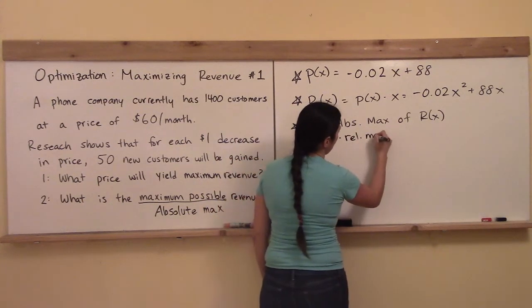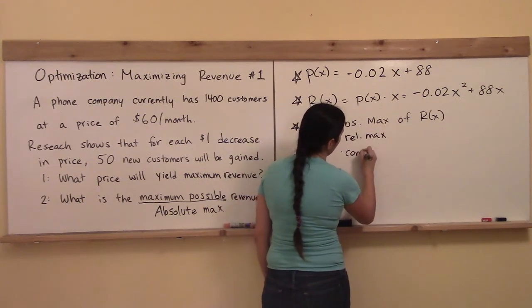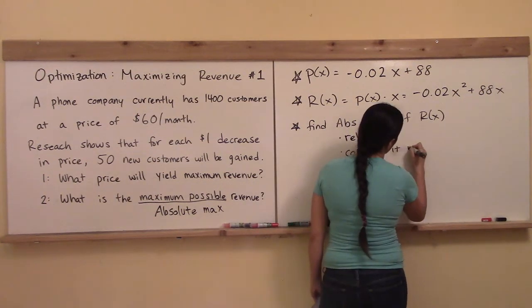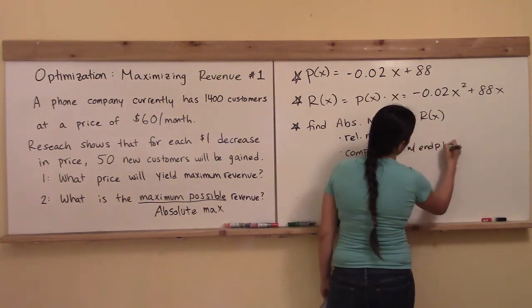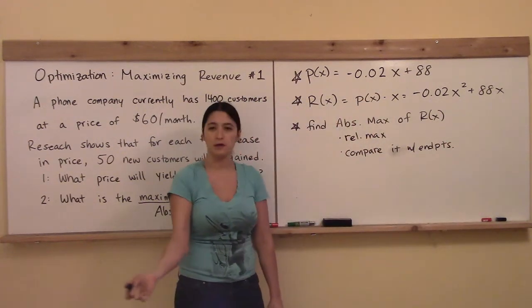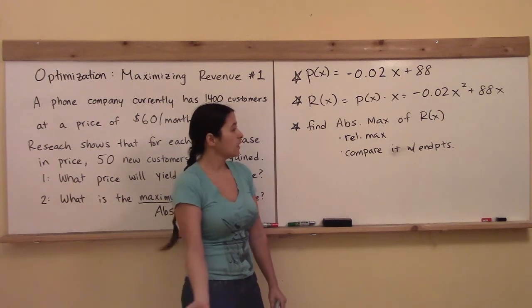First, we're going to look for the relative max, and then we're going to compare it with any end points. So we're going to compare that with the end points, and then whoever comes out as the highest y value wins the award for absolute maximum of my function.